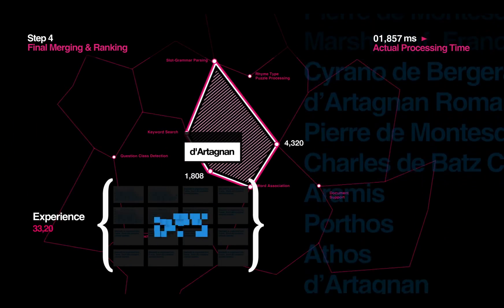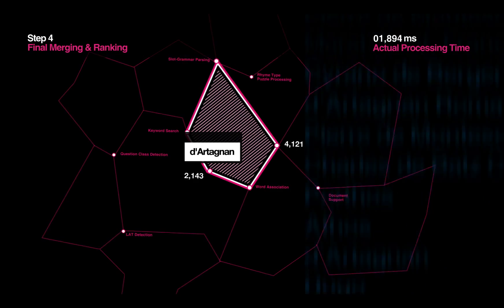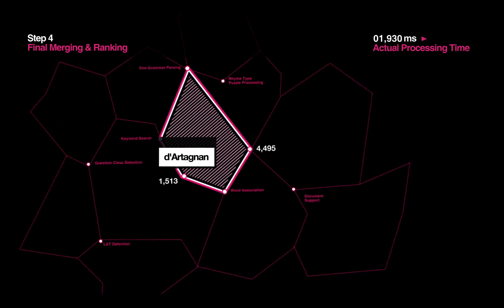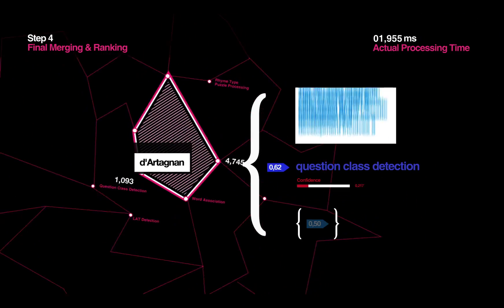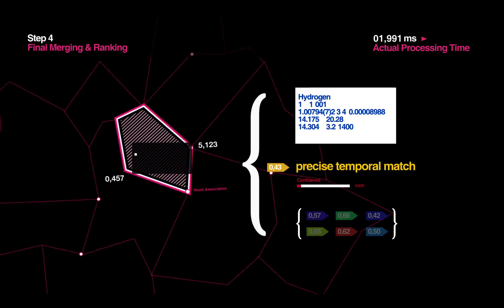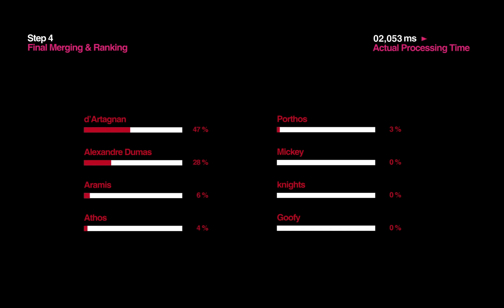It's not about memorizing trivia. By playing thousands of practice games, Watson learns how to weigh, apply, and control its algorithms to help decide the degree to which each piece of evidence is useful or not. These weighted evidence scores are merged together to decide the final rankings for all of the possible answers, with the highest ranked answers appearing in order on Watson's answer panel.